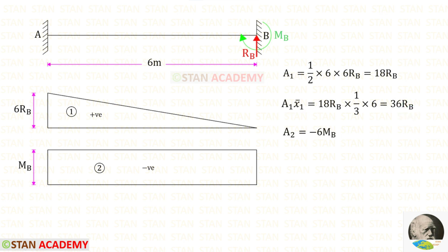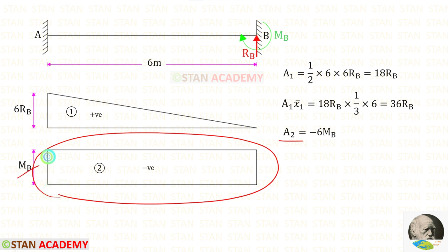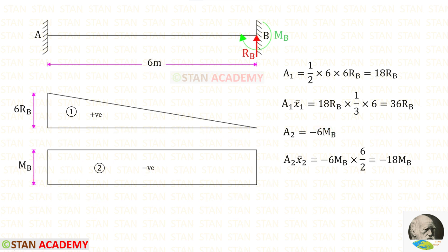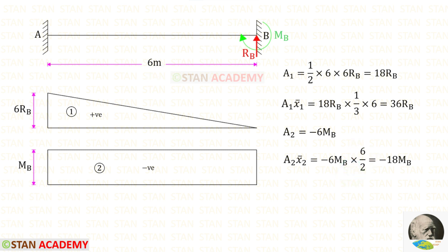For Area 2 (rectangle), multiplying Mb by 6 gives Area 2 = 6Mb, which is negative, so Area 2 = −6Mb. For x̄₂, the centroid of a rectangle lies at the center. Dividing length 6 by 2 gives the centroid distance of 3. So Area 2 × x̄₂ = −6Mb × 3 = −18Mb.